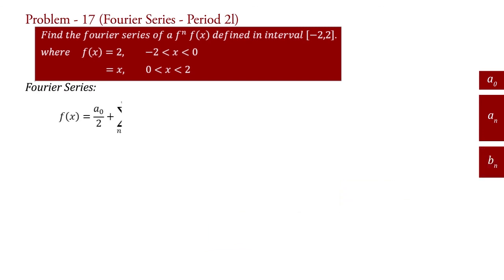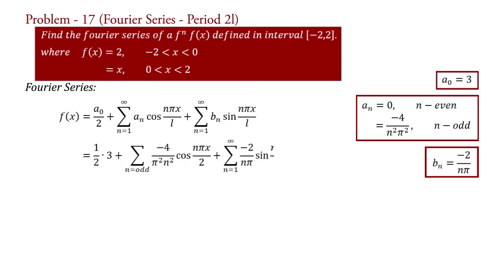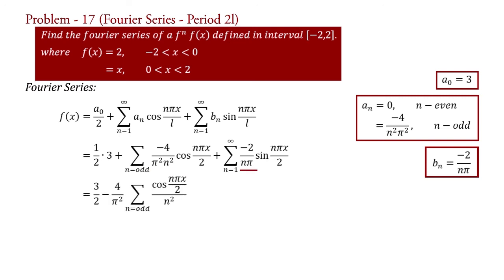Now the Fourier series is f(x) equal to this. Substituting the values of coefficients a0, an, and bn and taking L equal to 2: f(x) equal to 1 upon 2 into 3 plus summation n equal to odd of minus 4 upon (pi squared n squared) into cos(n pi x upon 2) plus summation n equal to 1 to infinity of minus 2 upon (n pi) into sin(n pi x upon 2). In this term we take minus 4 upon pi squared outside the summation, and in this term we take minus 2 upon pi outside the summation.